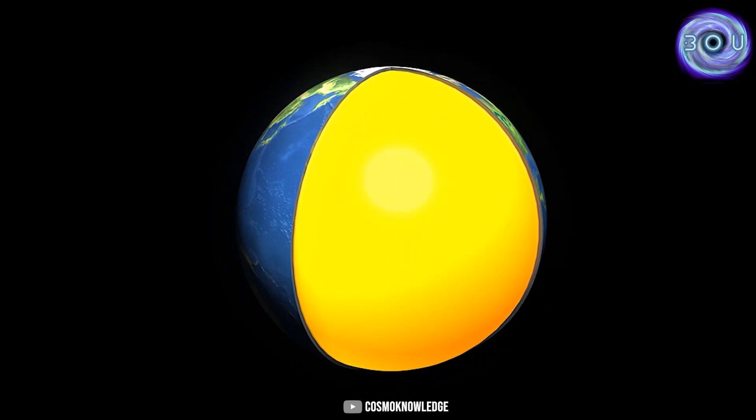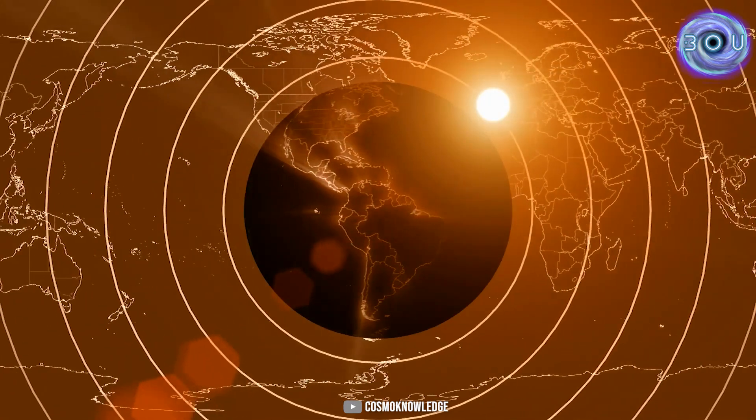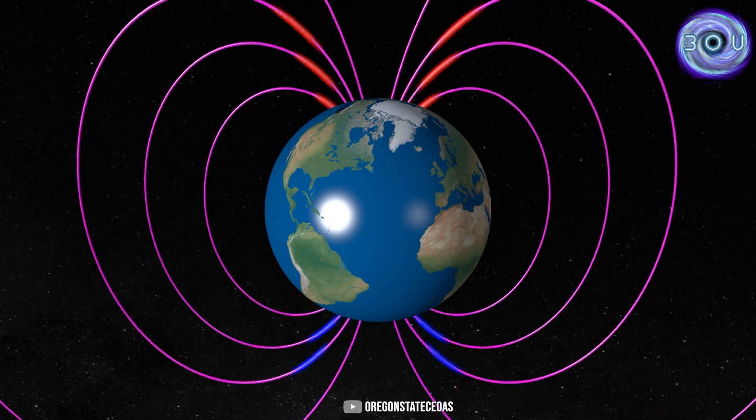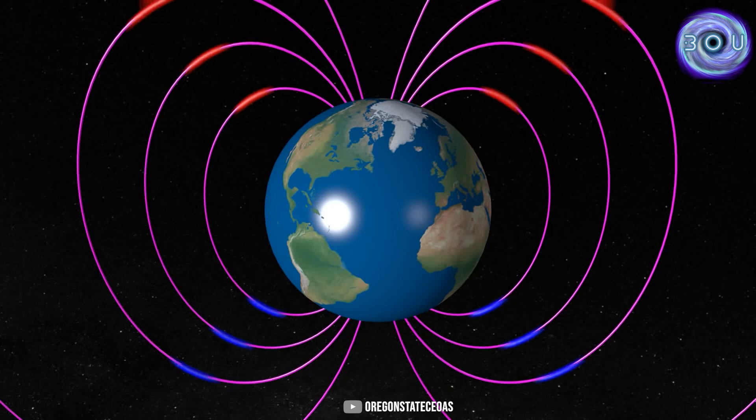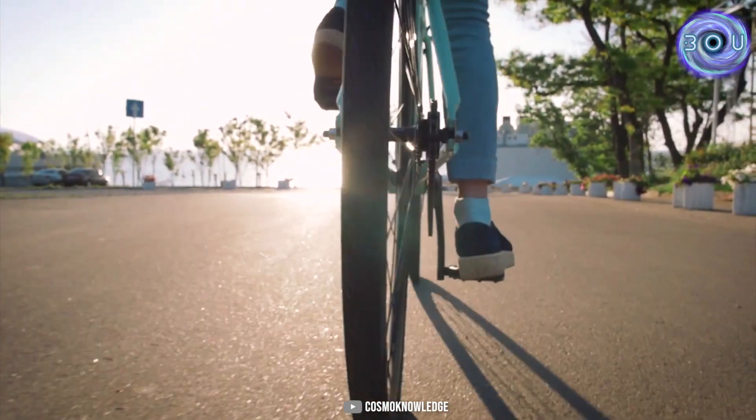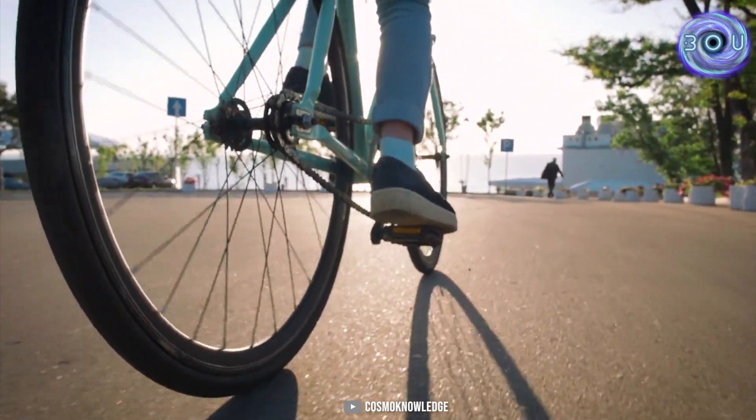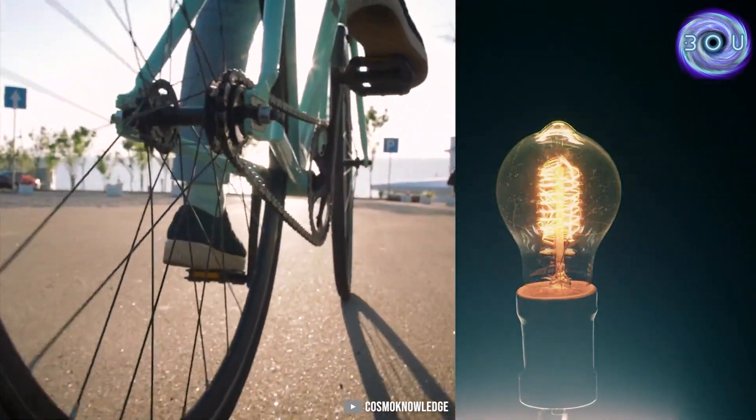This outermost layer is called the mantle. Metals in this region have become molten and charged, and for reasons that are still unknown, they are in motion. Since the movement of a charged fluid creates a magnetic field around it, in the same way, the magnetic field of the Earth has also been created, exactly like a bicycle dynamo, which can generate electrical power with rotation and light up the bicycle lamp. This is called the dynamo effect.